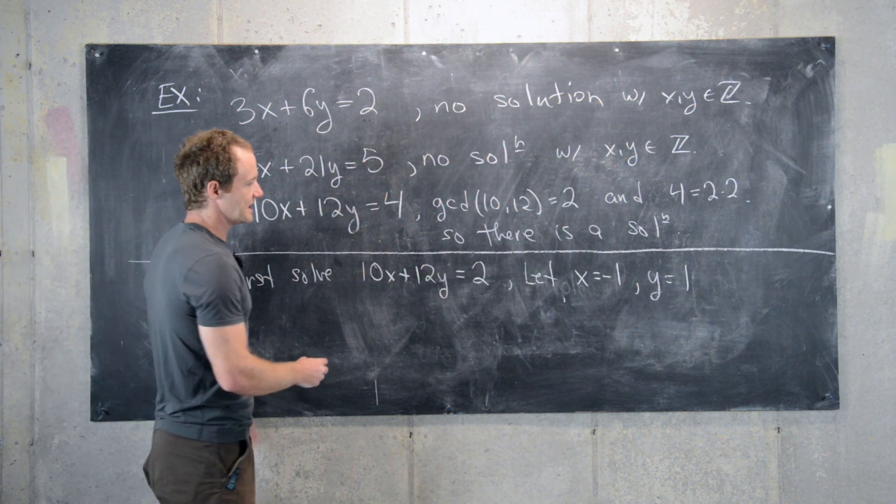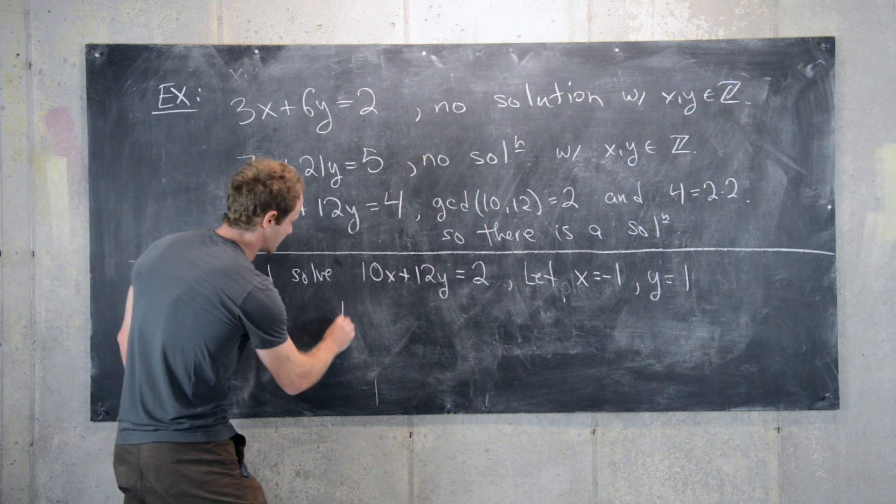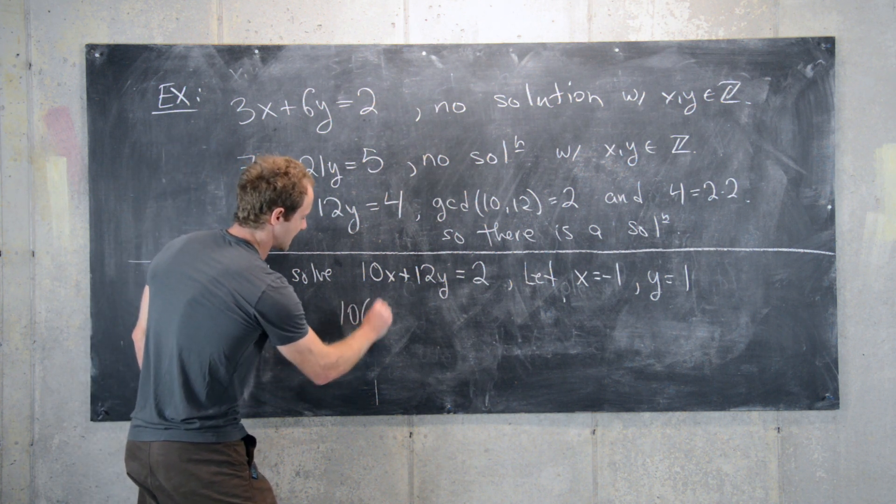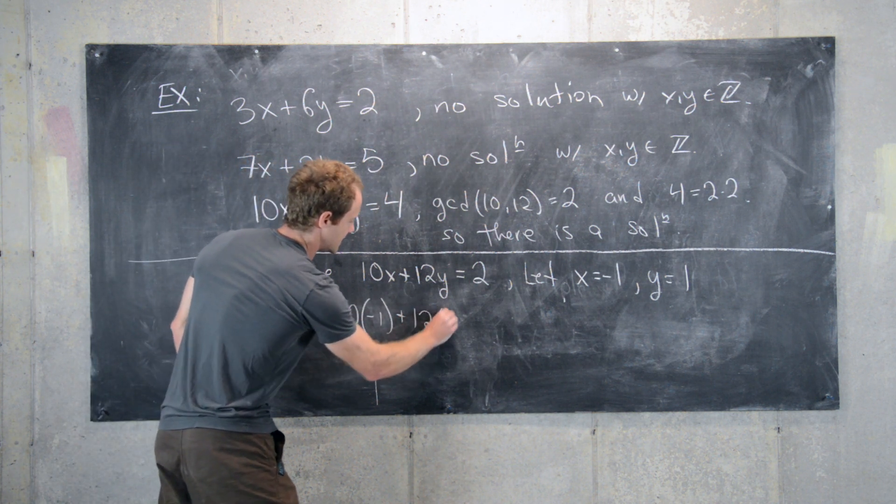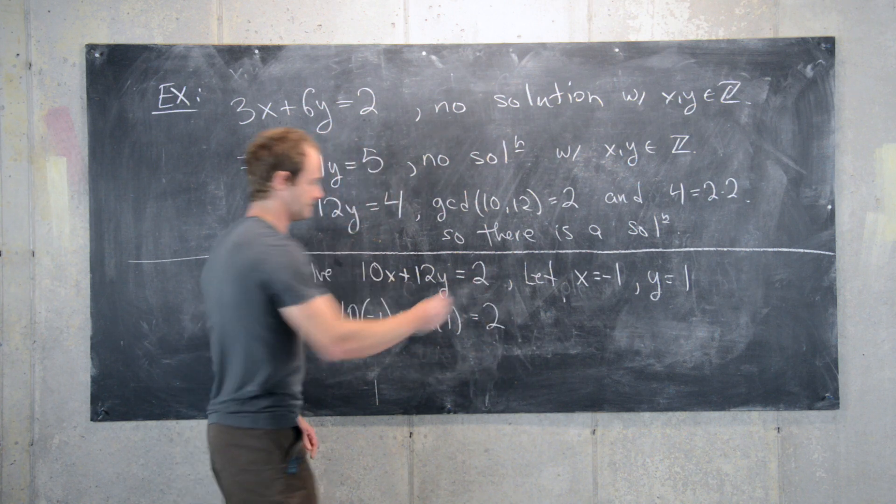This is pretty easy. We can let x equal negative 1 and y equal 1, and that will give us a solution to this equation. So we'll have 10 times negative 1 plus 12 times 1 equals 2.